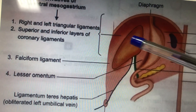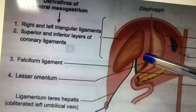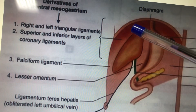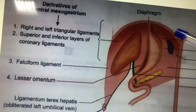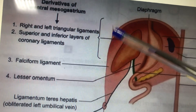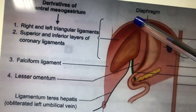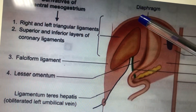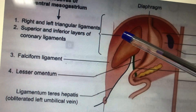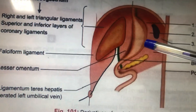Students should know that the ventral mesentery is derived from the septum transversum. Students often think septum transversum only gives rise to the central tendon of the diaphragm, but it also gives rise to the ventral mesentery.